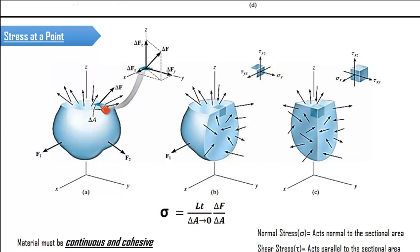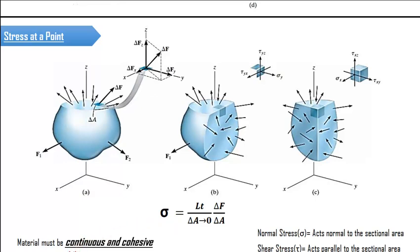As the area decreases to a small value delta A, the force delta F also decreases, but the ratio delta F to delta A is always a finite quantity for a particular cross section. This particular ratio is defined as the stress. In order to define this stress, we make two assumptions: one is that the material is continuous, and the second is that it is cohesive.